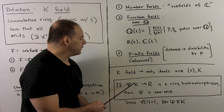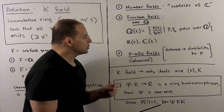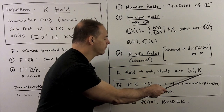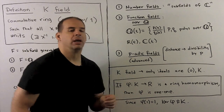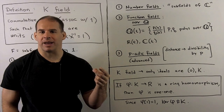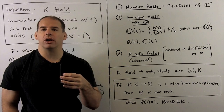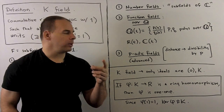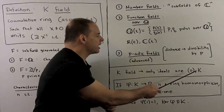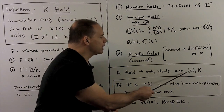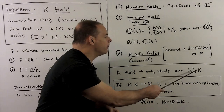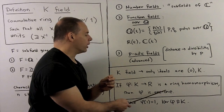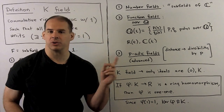Because k is a field, the only options for the kernel are 0 and k itself. By our definition of ring homomorphism, phi of 1 goes to 1, so the kernel can't be k itself. The kernel must equal 0, and that forces phi to be one-to-one, as promised.